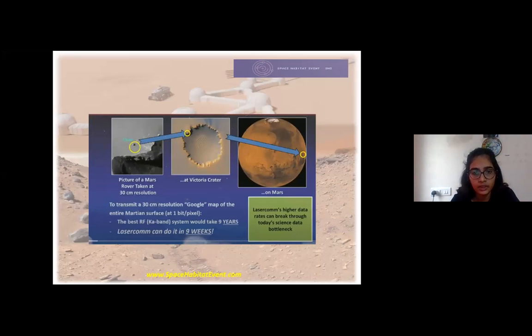Here you can see the rover picture on Mars near the Vector crater. If we have to Google Map this Mars with this rate of data transmission, like 1 bit per pixel, it would take 9 years. If we go for laser communication, this could be done just in 9 weeks. The problem is not only the faster data transfer rate but also the time that we get the data.